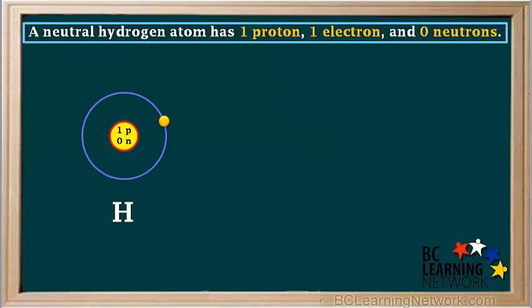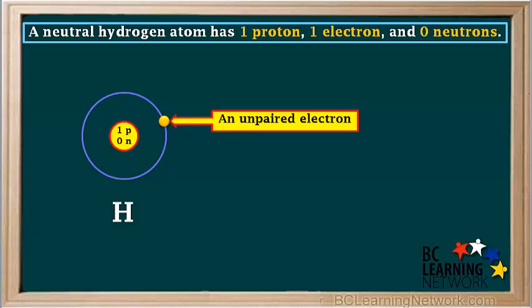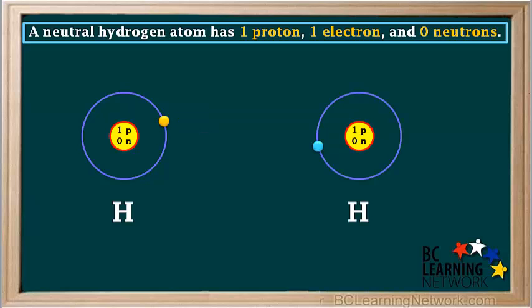So the Bohr model for a neutral hydrogen atom would look like this. Notice that a single hydrogen atom has an unpaired electron. This means it is unstable. Now we'll draw another hydrogen atom beside the first one. This one also has an unpaired electron, making it unstable.